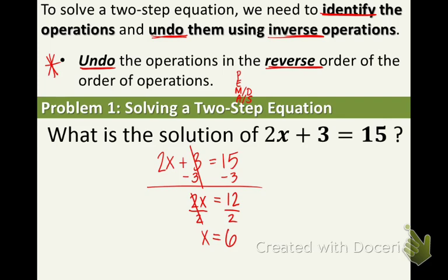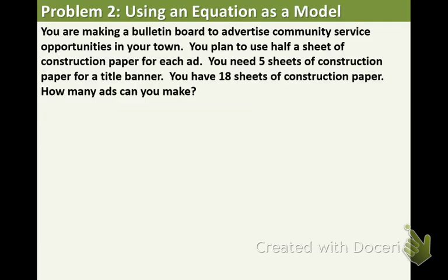So X equals 6 is the solution. Now remember the easiest checking way is to plug the 6 in for the X. 2 times 6 is 12 and 12 plus 3 is 15. So that's the efficient checking method. Example 2.